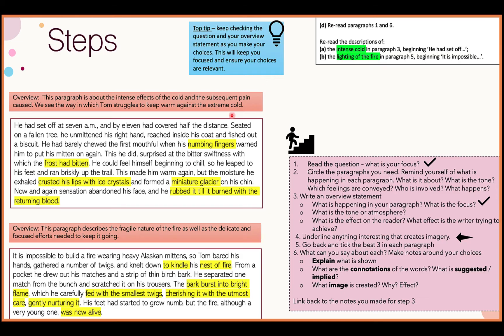The first choice I got to was 'numbing fingers.' Notice how short my selection is — I've only picked the part of the sentence I need. I don't need the rest of it. The idea of numbing fingers is imagery, and I already know what this means and what the writer is trying to show about just how cold it is. The word I would zoom in on is 'numbing.'